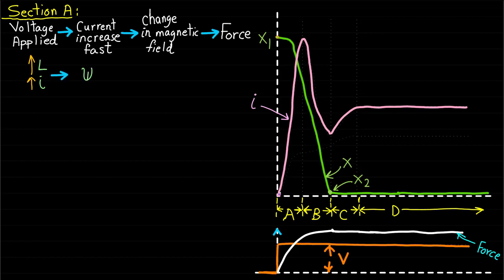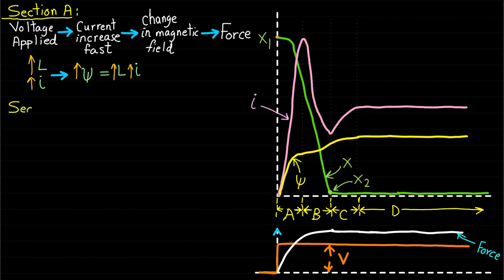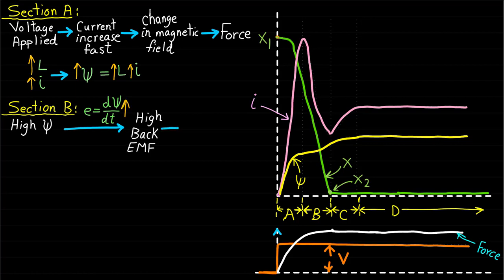Since the current I and the inductance L are increasing, the magnetic flux linkage psi will be changed or increased at a high rate. Because of the high change in the magnetic flux linkage, the magnetic circuit will produce enough back EMF to cause the current to be reduced, as shown in section B.